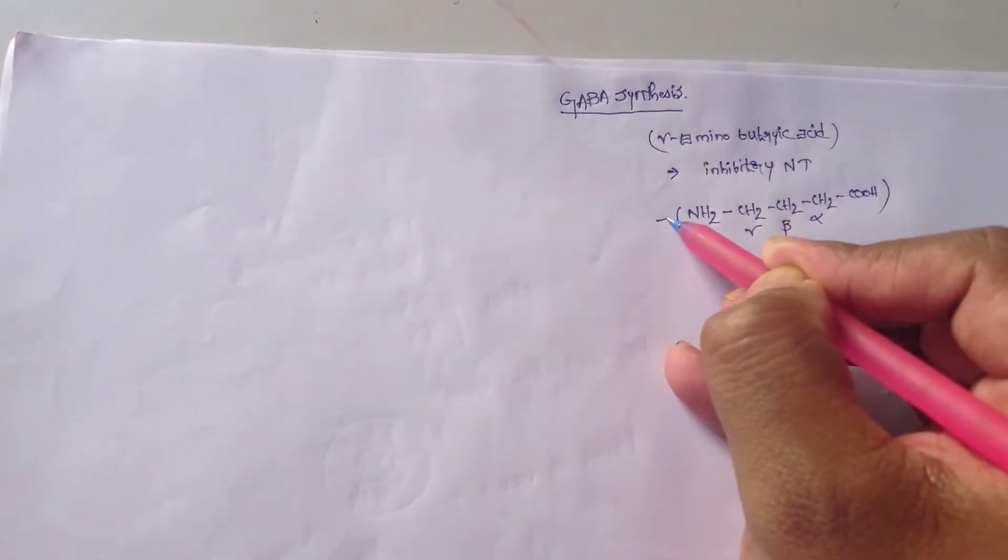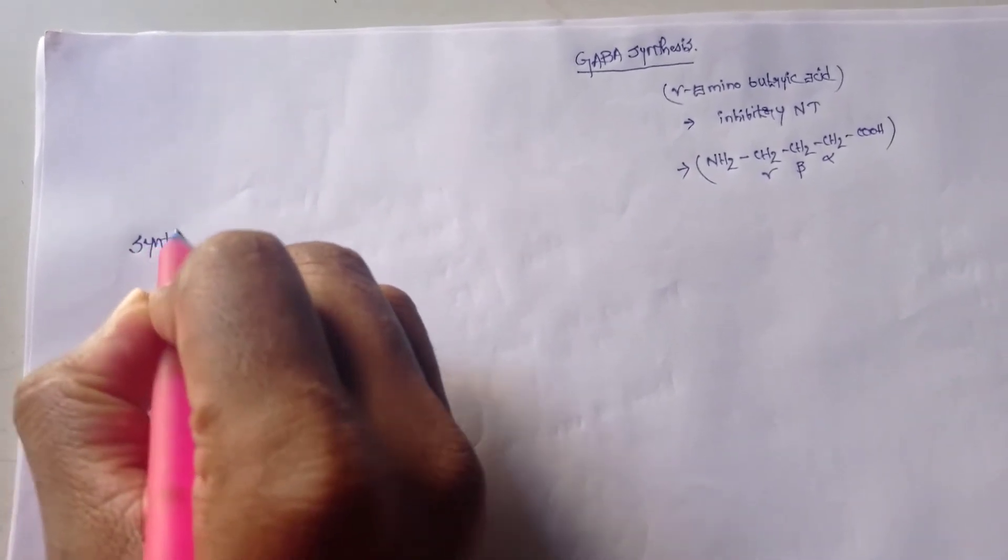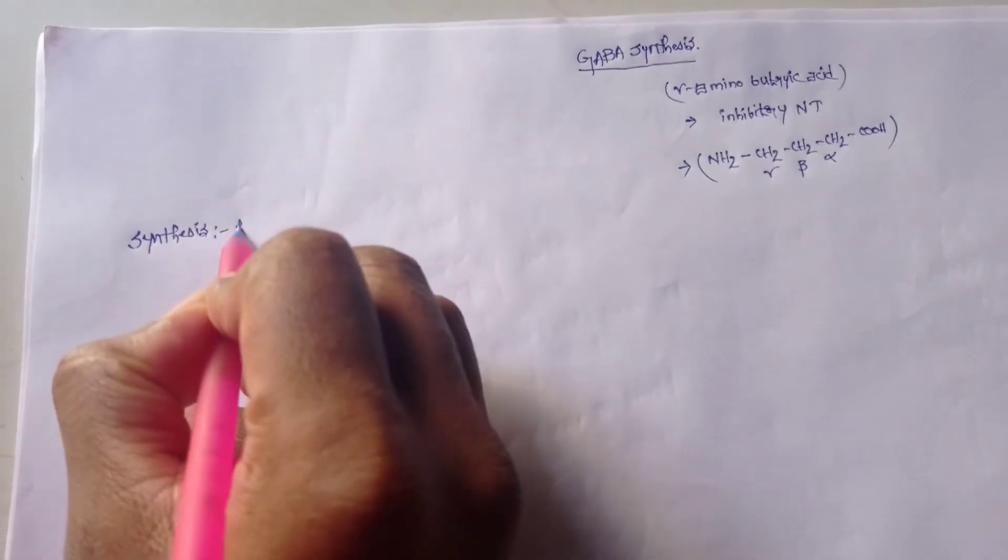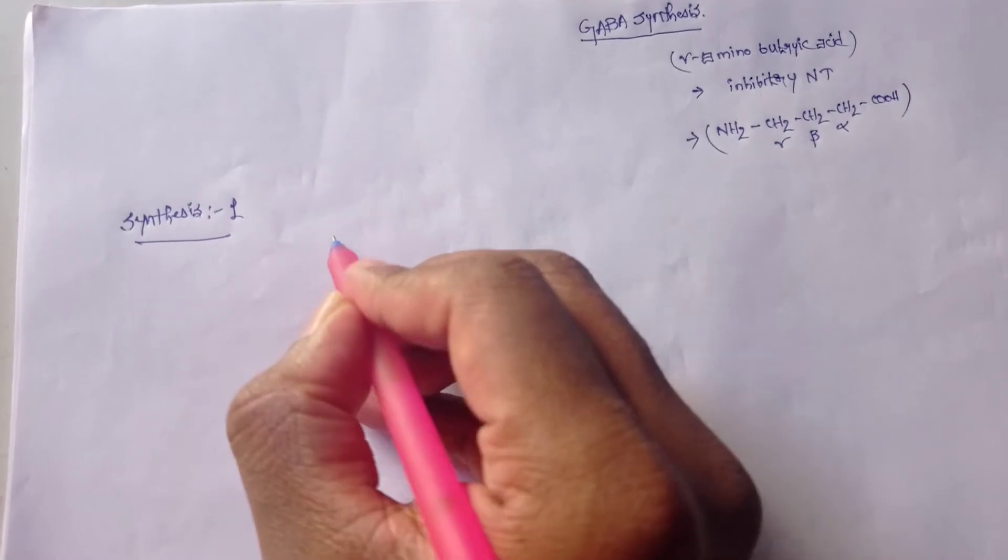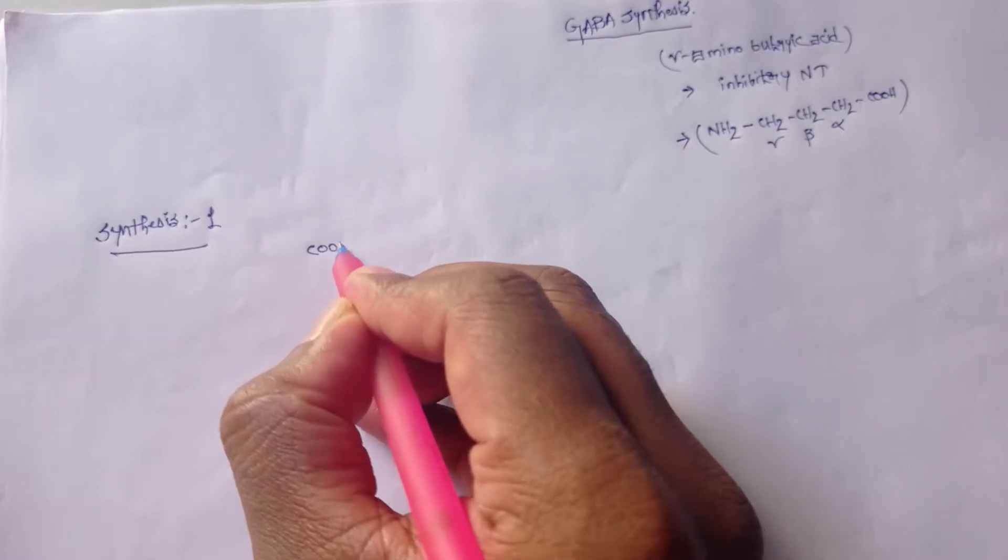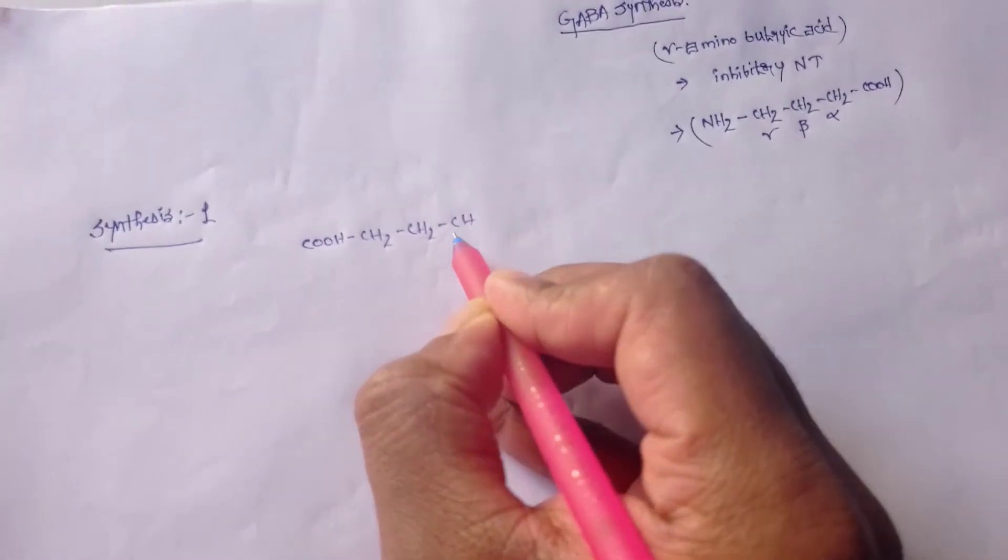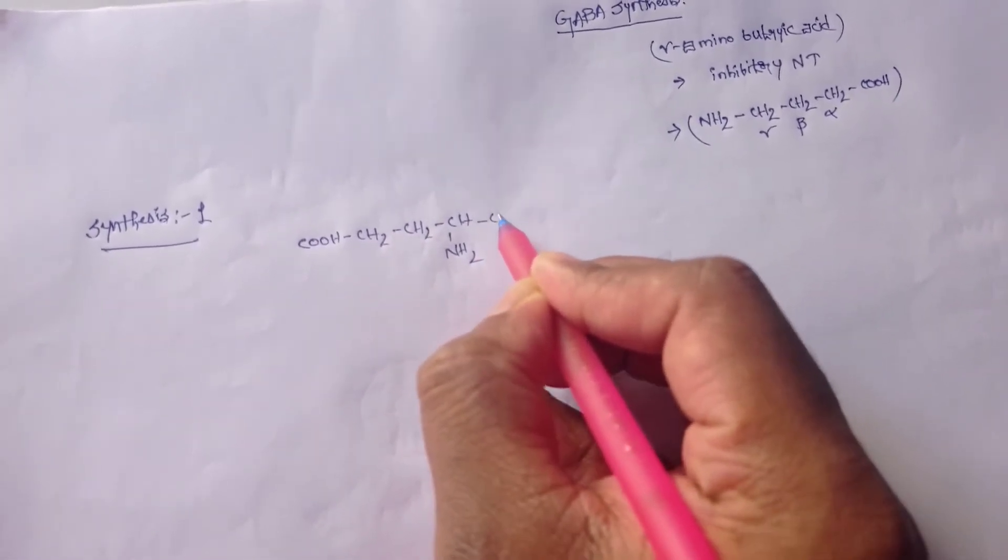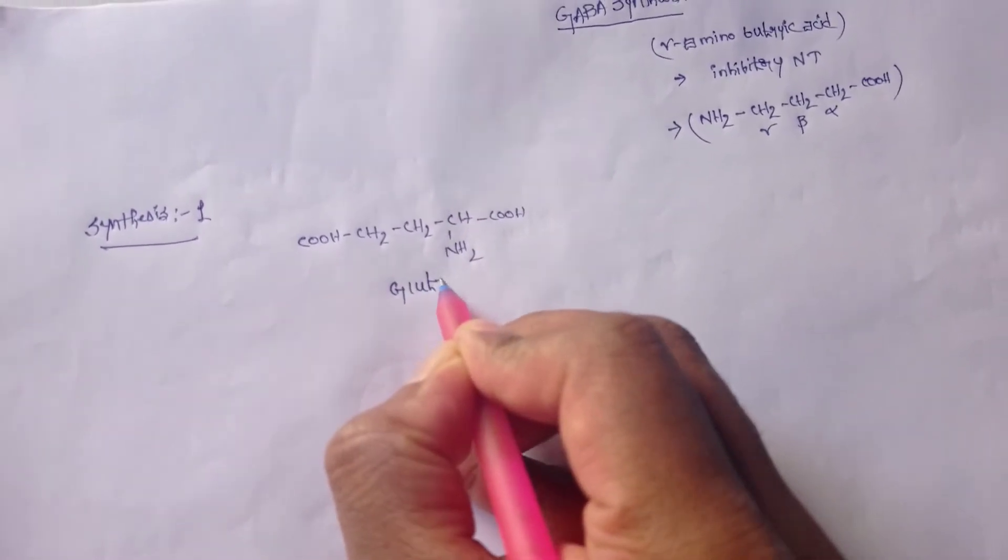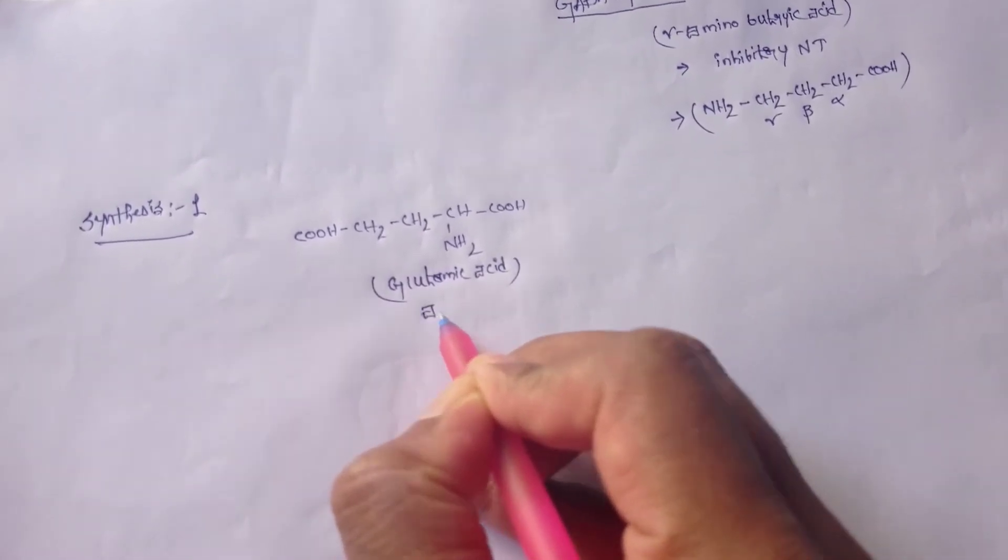This is the structure of GABA. Coming to synthesis - synthesis one from glutamic acid. GABA can be synthesized. This is glutamic acid, which is an acidic amino acid.